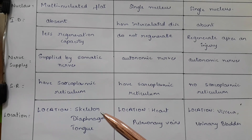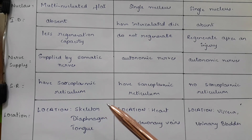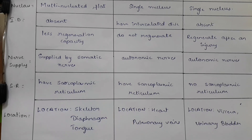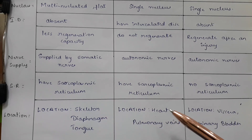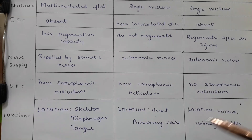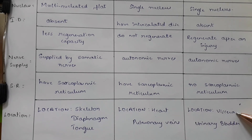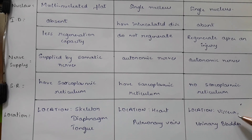Lastly, the location: Skeletal muscles are located in the skeleton, the diaphragm, and the tongue. Cardiac muscles are located in the heart and the pulmonary veins. Smooth muscles are located in the viscera and the urinary bladder.